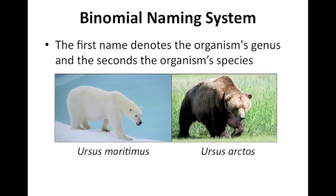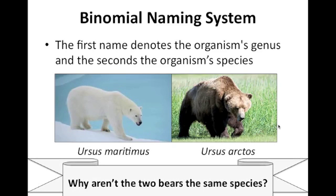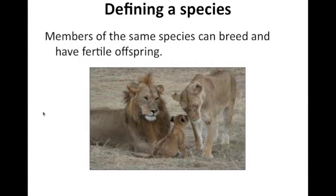Another example is the brown grizzly bear. The two bears — polar bear and grizzly bear — belong to the same genus, Ursus, however they are of a different species, the brown grizzly bear belonging to the species Arctos. The definition of a species: members of the same species can breed together and produce fertile offspring. So these two lions are members of the species Leo, and their offspring should grow up to be able to have children of their own.